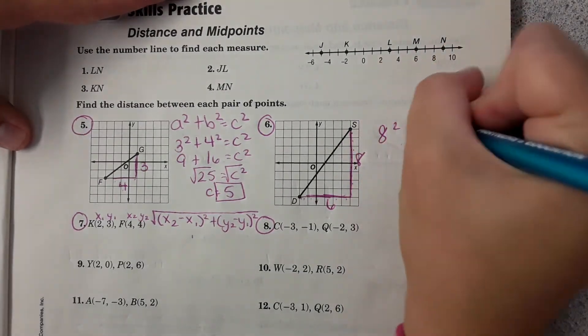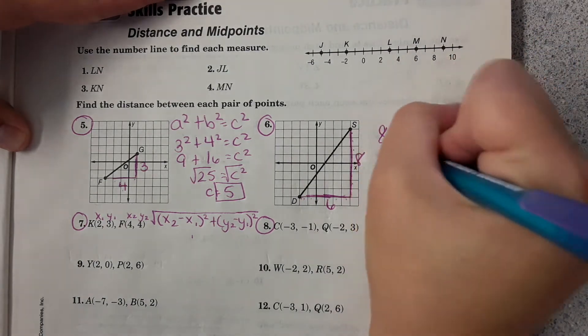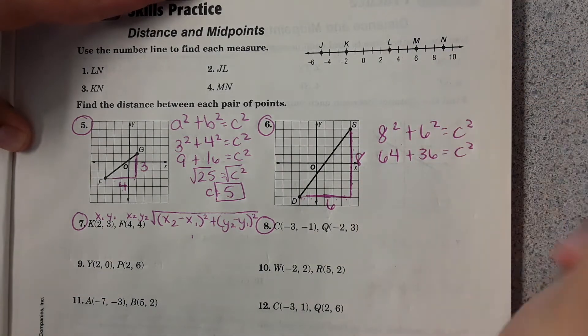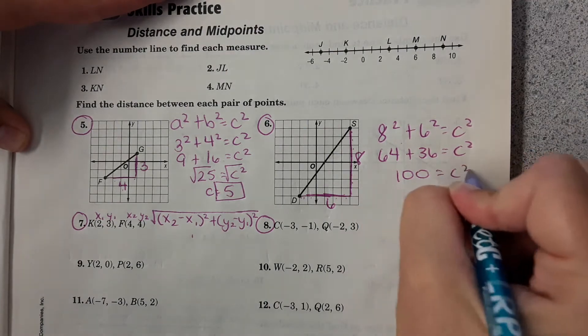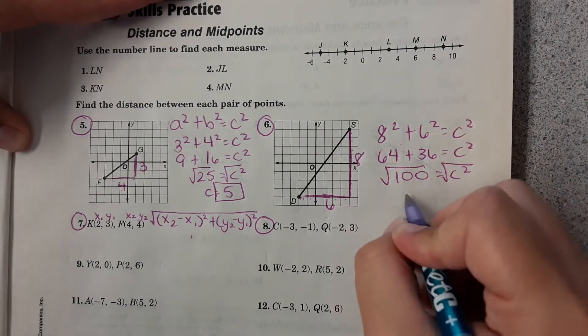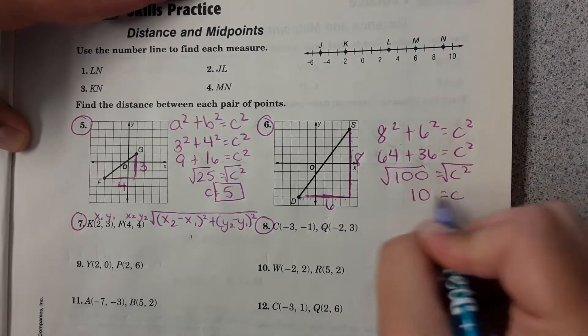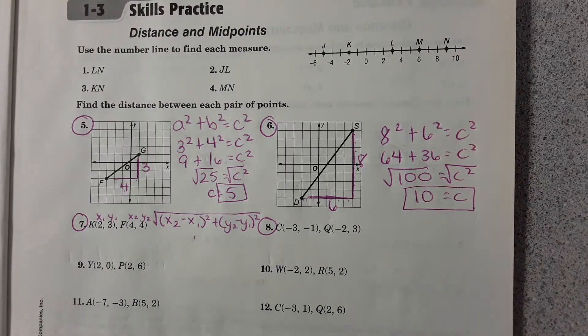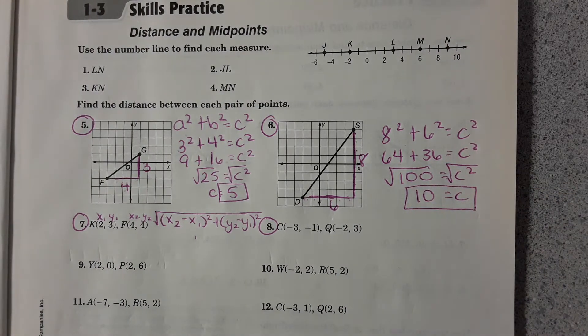8 squared plus 6 squared. And you get 10 equals C. If you didn't quite get that, it's normally a very small mistake. Just find what that mistake is so you don't make it again.